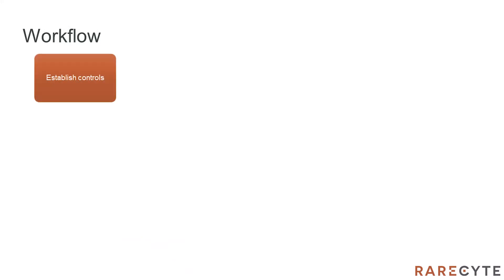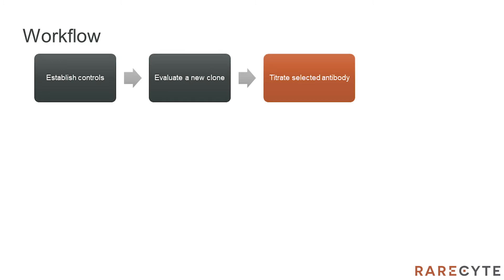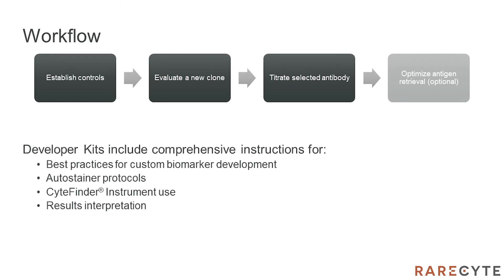The general workflow of creating your own custom assay is: first, to establish control samples; second, to evaluate new antibody clones; and third, to titrate the selected clone. A last optional step is to optimize antigen retrieval, but this should generally be unnecessary. Included with the developer kit are all necessary reagents and comprehensive instructions to help users quickly and effectively establish a new custom assay.